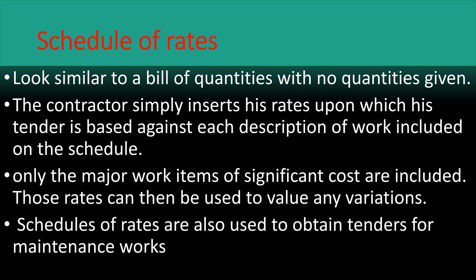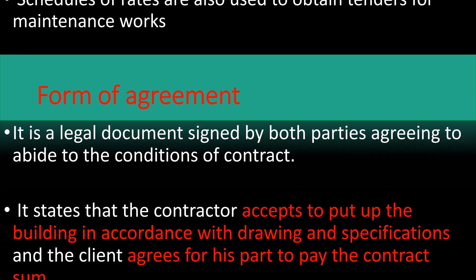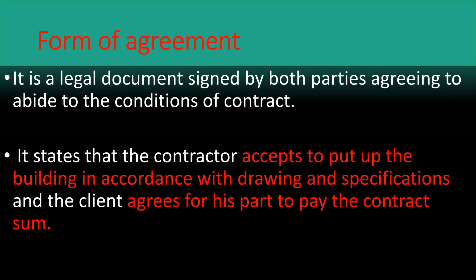The sixth document is the form of agreement. This is a long legal document signed by both parties agreeing to abide by the conditions of contract. It states that the contractor accepts to put up the building in accordance with drawings and specifications, and the client agrees for his part to pay the contract sum. Once the form of agreement is filled, it shows that the contractor and the client are entering into the contract — they have formed an agreement that the contractor shall deliver the building and the client shall pay the contractor.